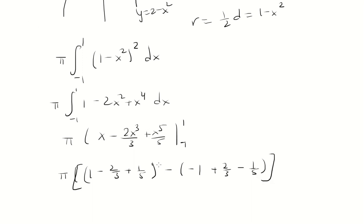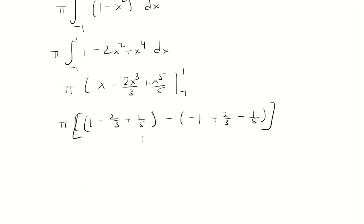So a couple things are going to cancel. Actually none of these cancel, so we're just going to continue. We have 1 minus negative 1 is 2. Negative 2 thirds minus 2 thirds is negative 4 thirds. 1 fifth minus negative 1 fifth is 2 fifths.